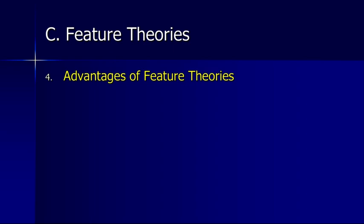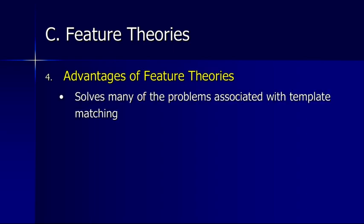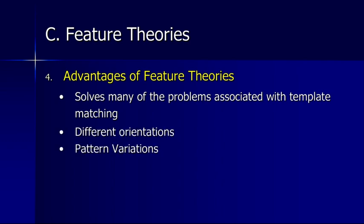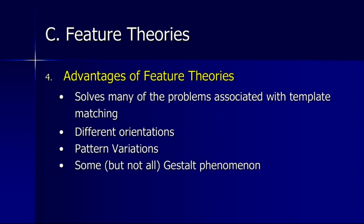Some advantages of feature theories are that they solve many of the problems associated with template matching theory. We can deal with different orientations, different pattern variations, and we can even deal with some — but not necessarily all — gestalt phenomena, because there are some features there that allow us to actually recognize patterns and objects.